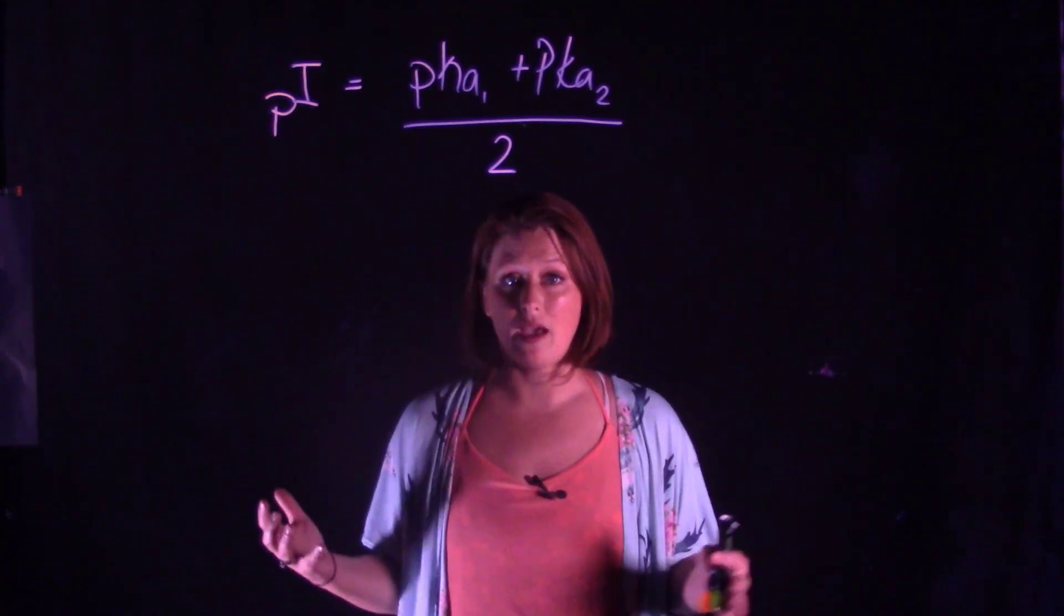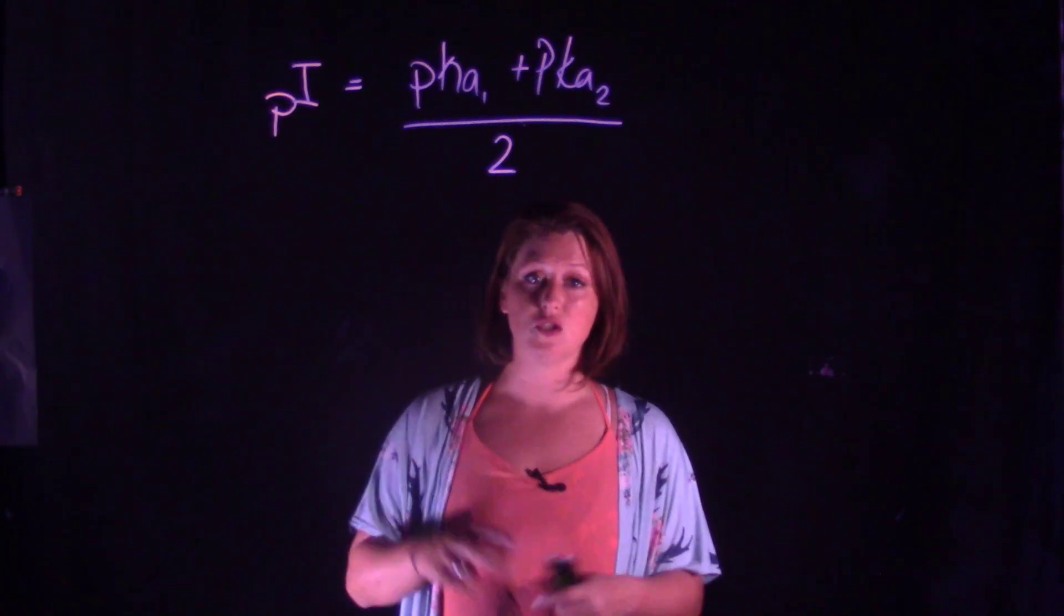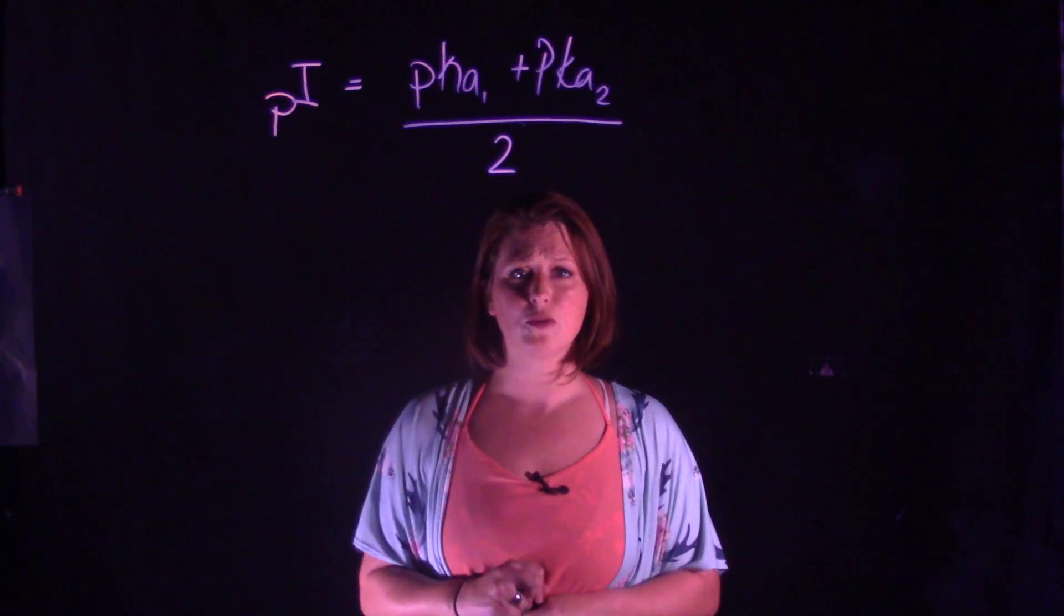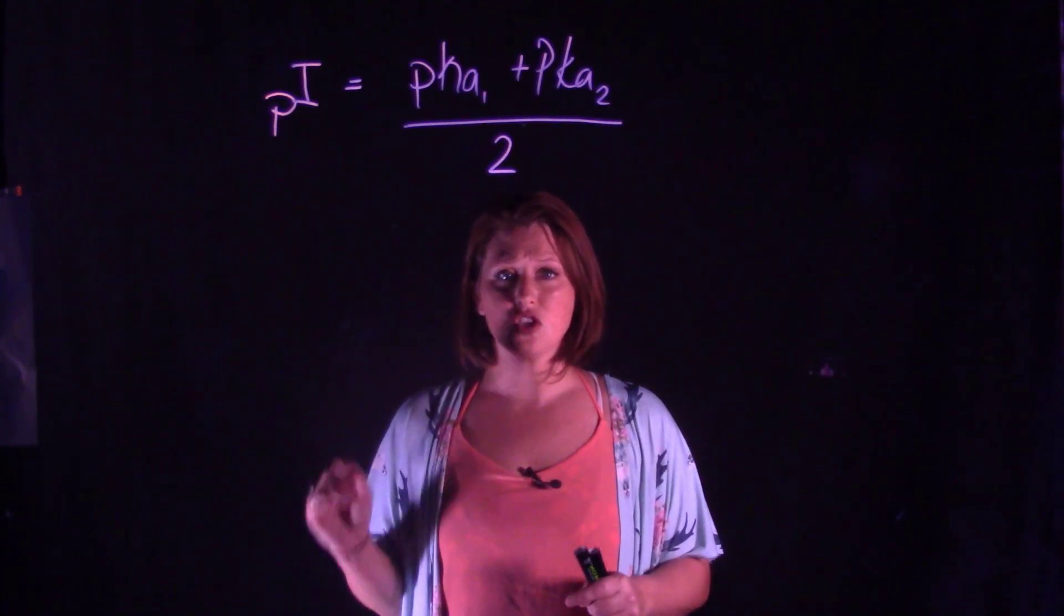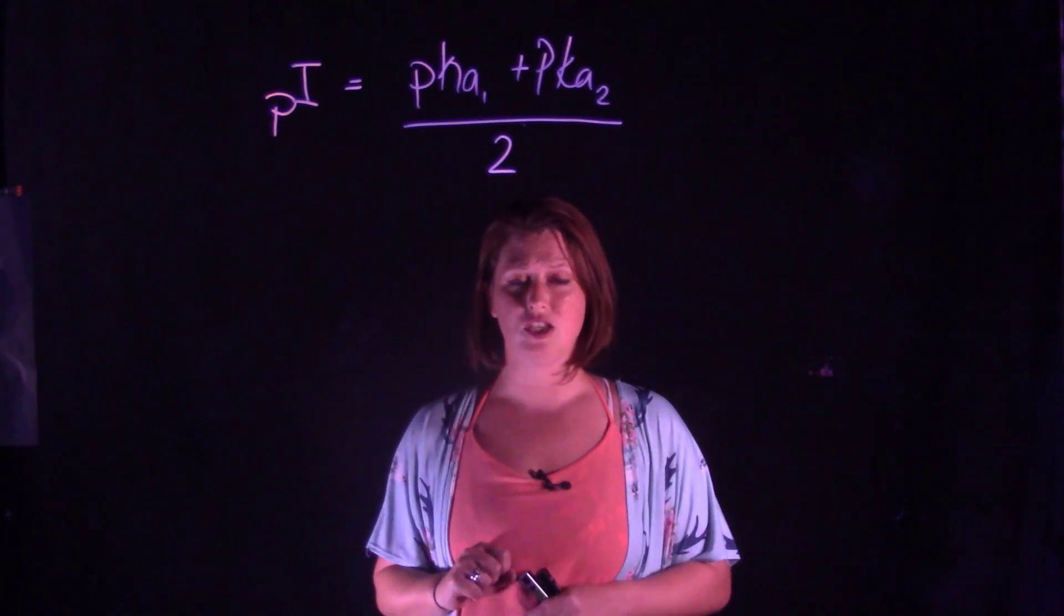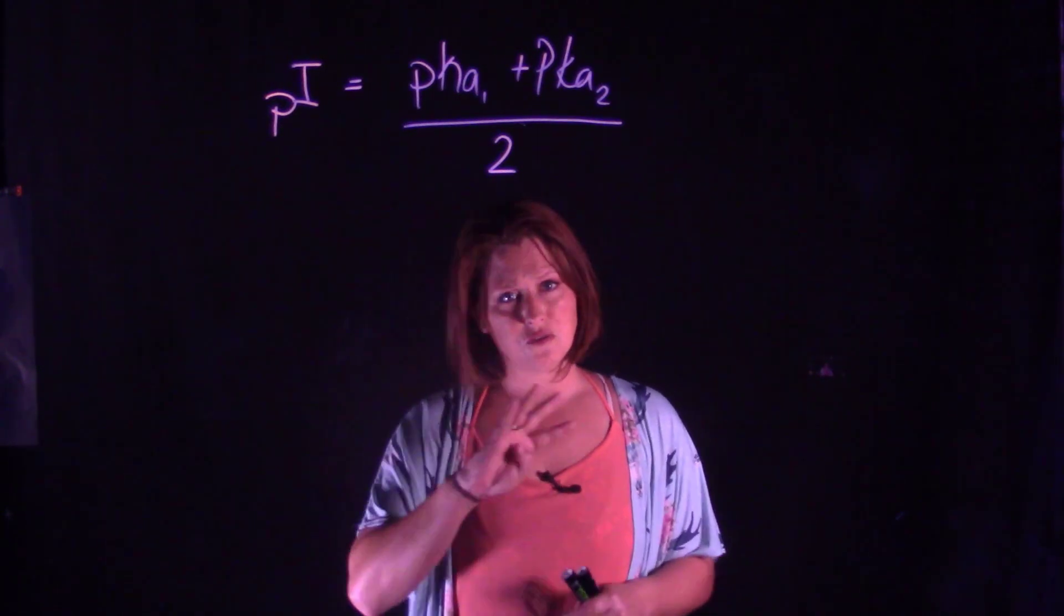However, for polypeptides we often have multiple ionizable groups and more than two pKa's, so the trick for determining the isoelectric point is determining which two pKa's we need to use for our calculation.